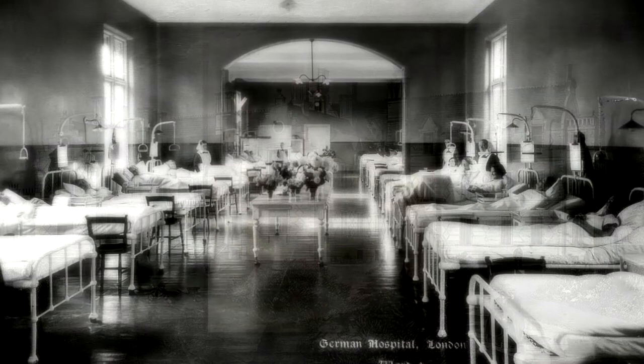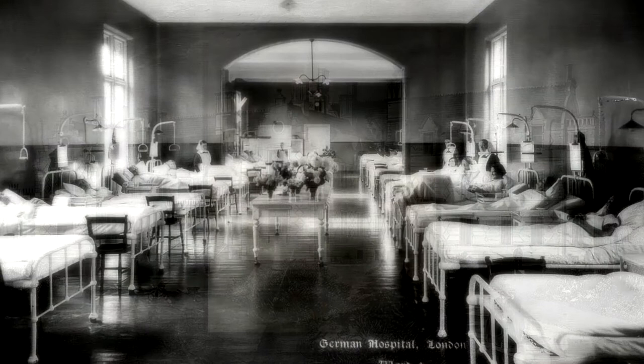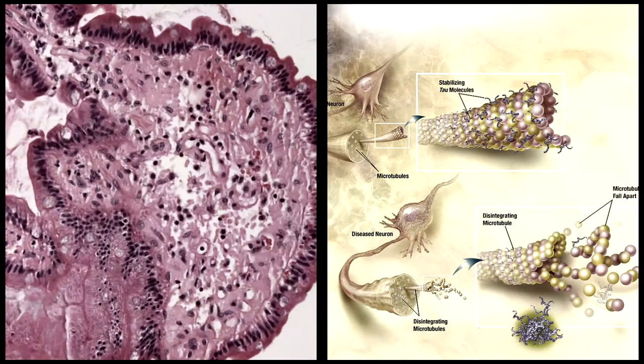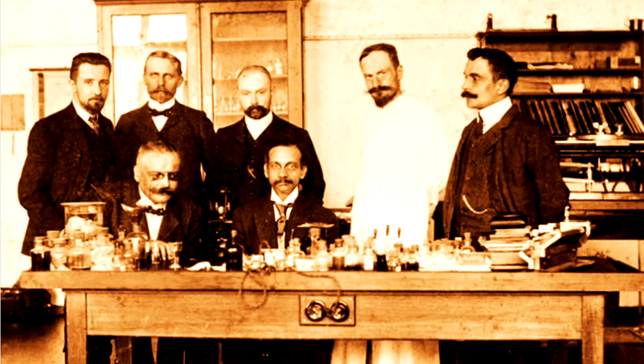Alois Alzheimer described in 1907 this woman who was fairly young who'd had profound problems with language and memory. She died and he was able to look at her brain and he noticed there were these distinctive pathological features. We now know those as plaques and tangles.